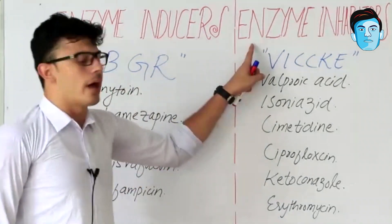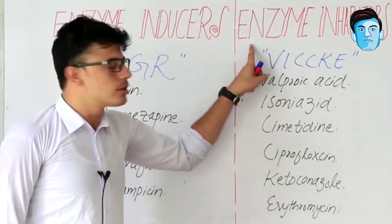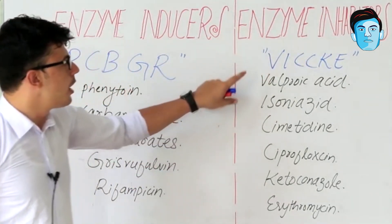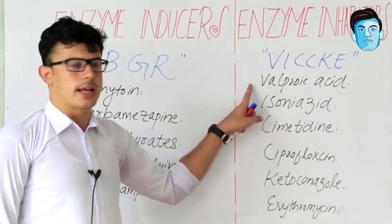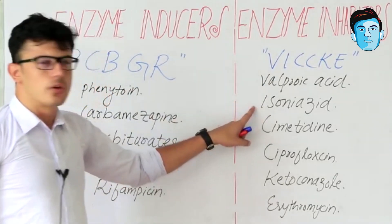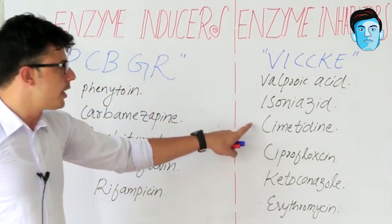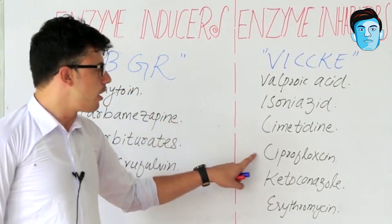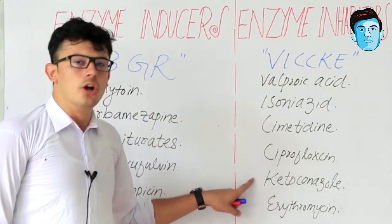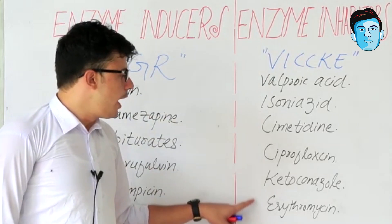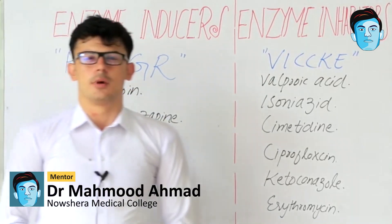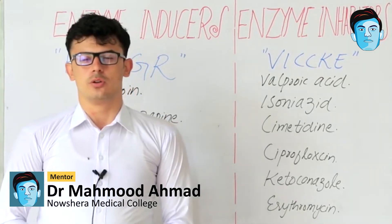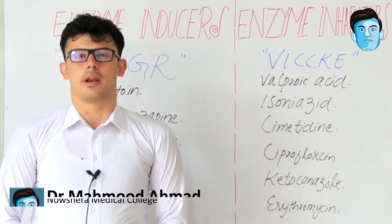For the enzyme inhibitors, we have Valproic acid, Isoniazid, Cimetidine, Ciprofloxacin, Ketoconazole, and Erythromycin. That's all about the enzyme inducers and enzyme inhibitors.